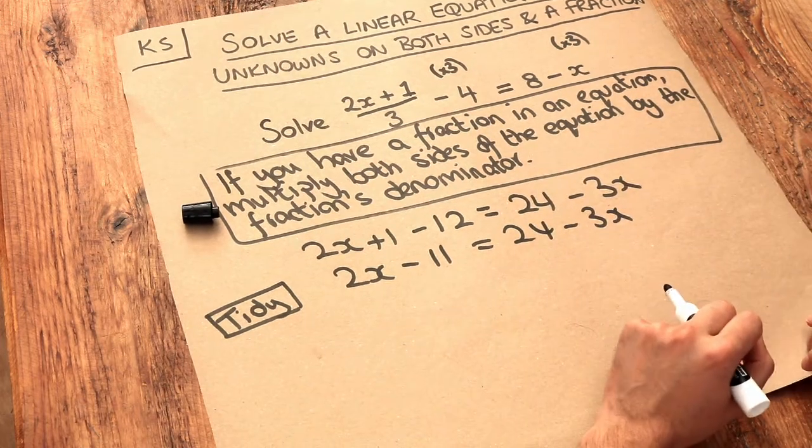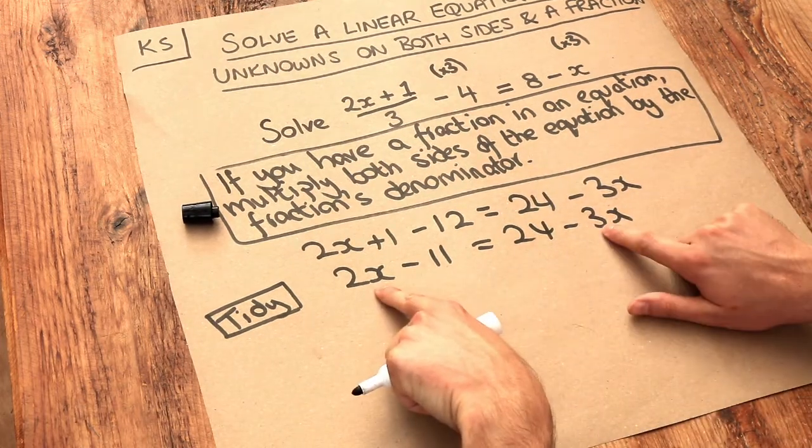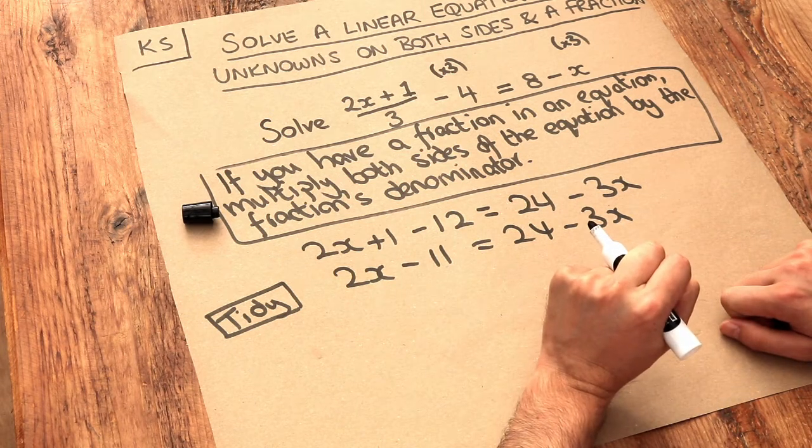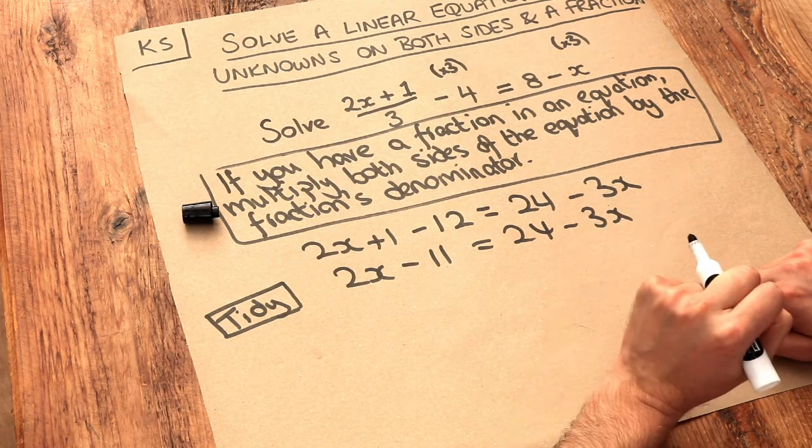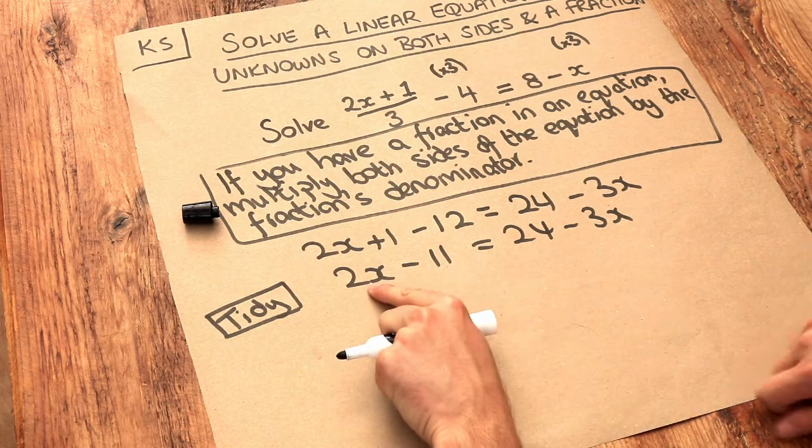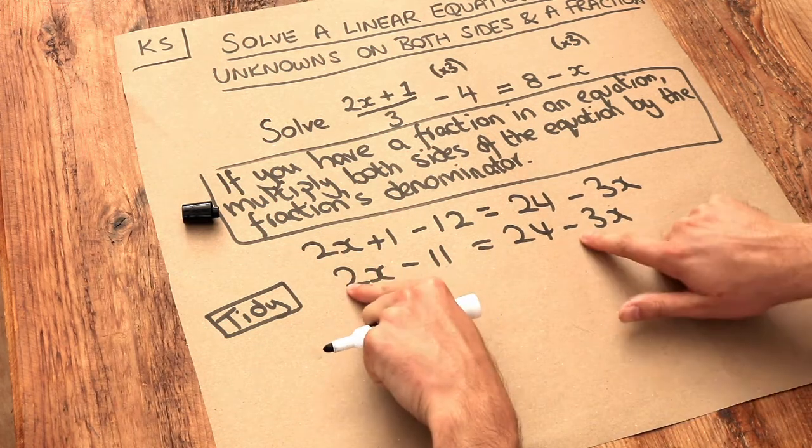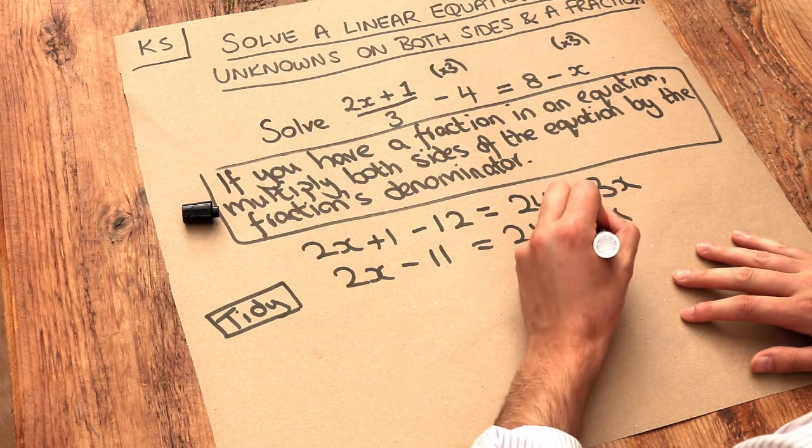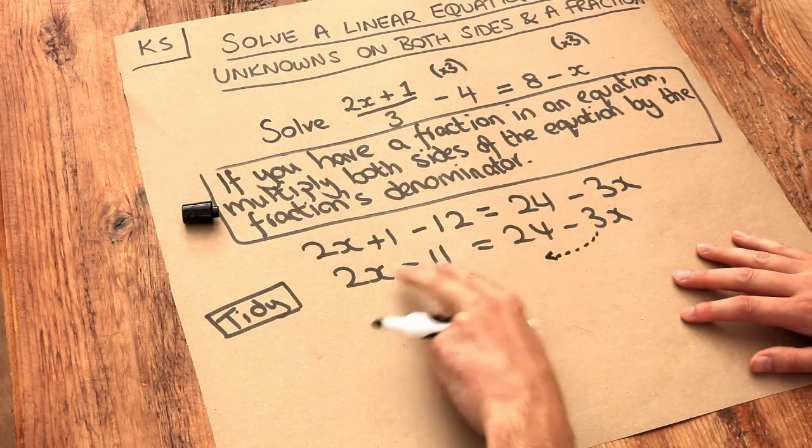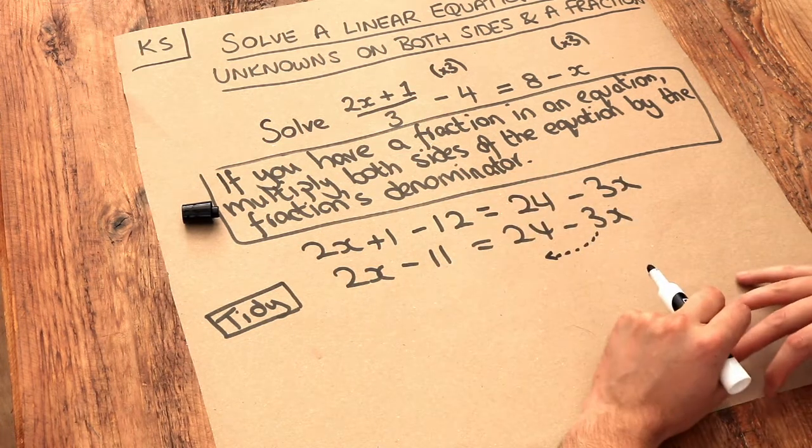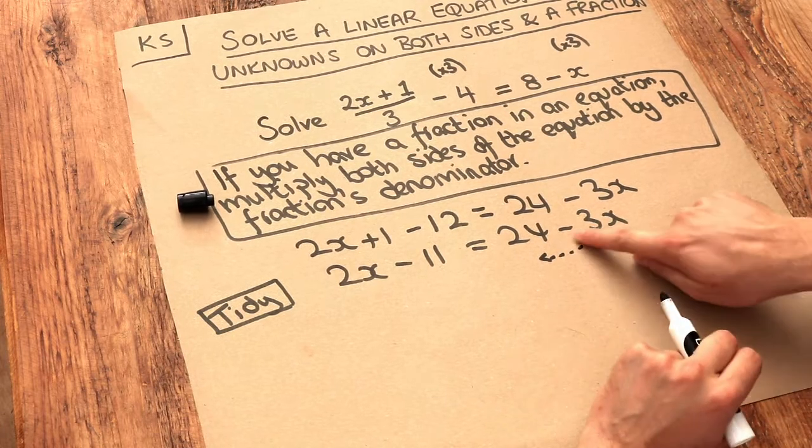Now, in a previous video we saw that if we've got the unknown on both sides of the equation, we collect the x terms on the side with more x's. So 2x is bigger than minus 3x, 2 is bigger than minus 3. And therefore we want to get the x terms on the left hand side of the equation where there's more x's. So we therefore want to get rid of that minus 3x.